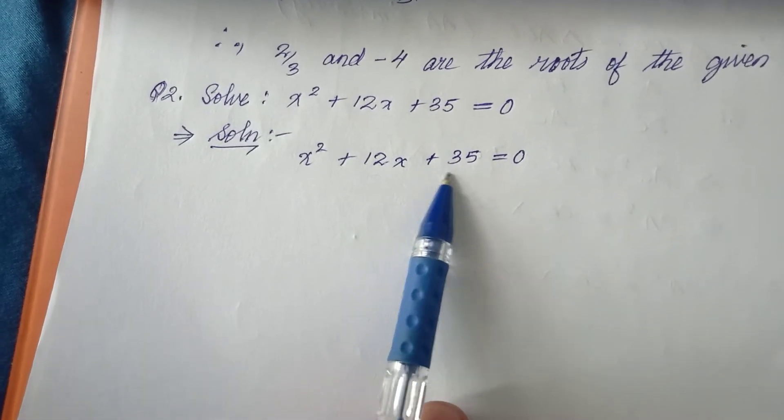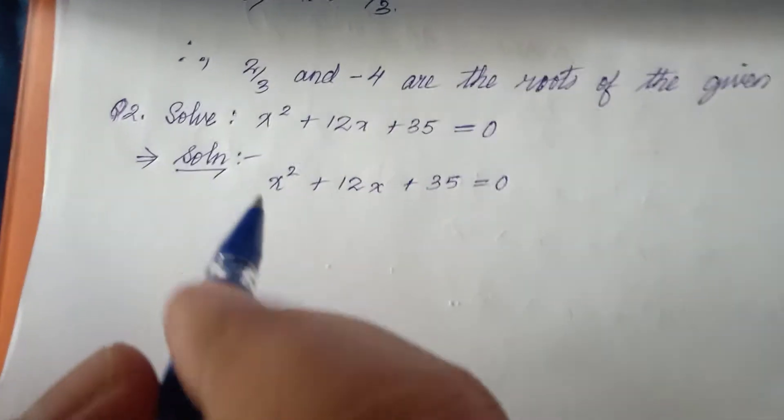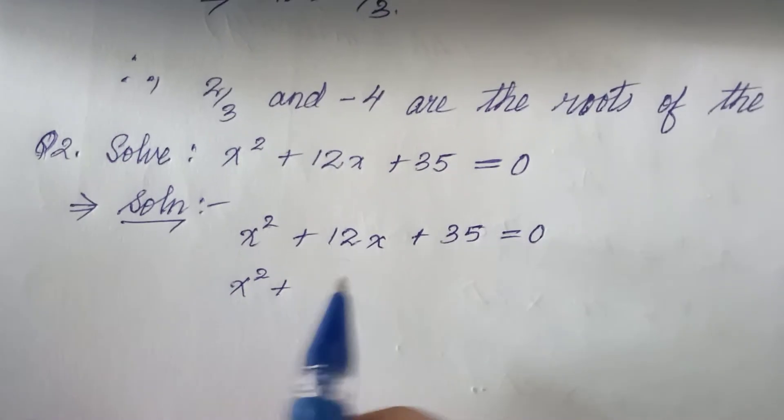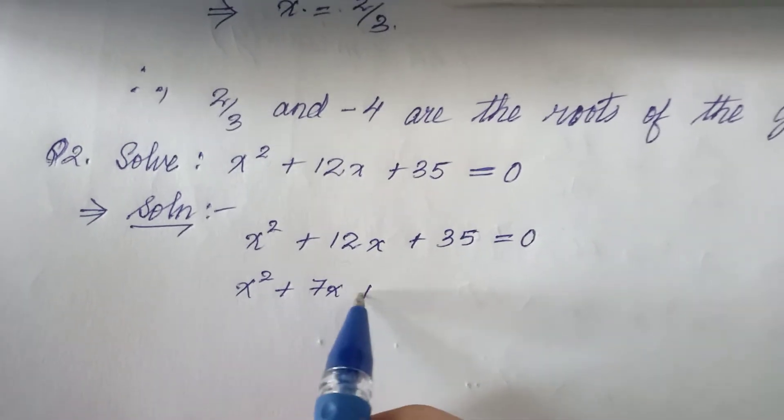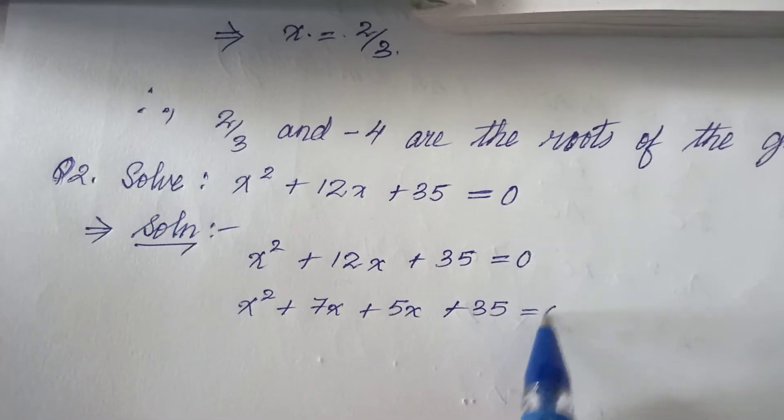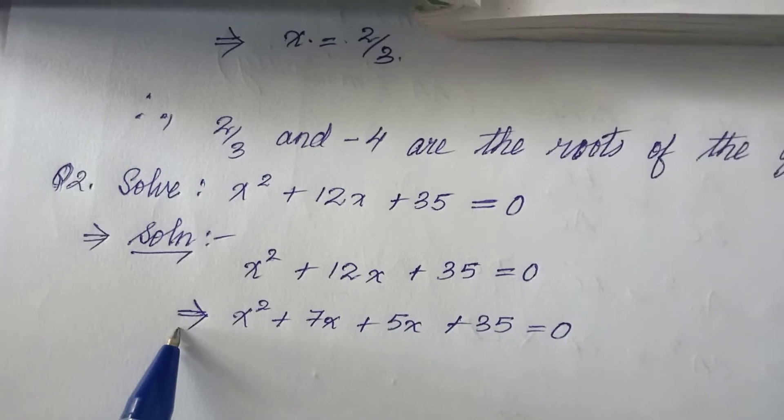So what is 35? 7 times 5 is 35, and 7 plus 5 is 12. So we can use 7 and 5. It's very simple: x² + 7x + 5x + 35 = 0.